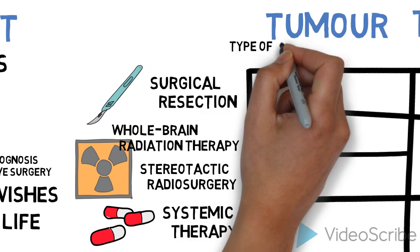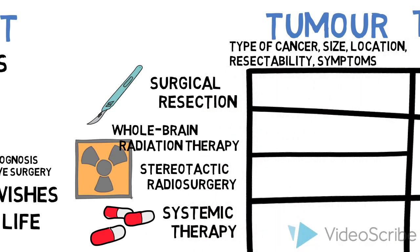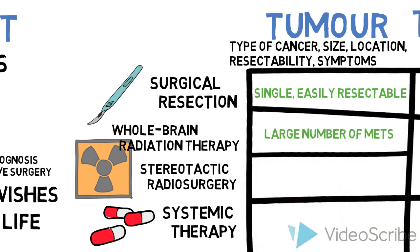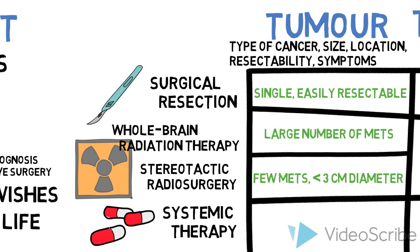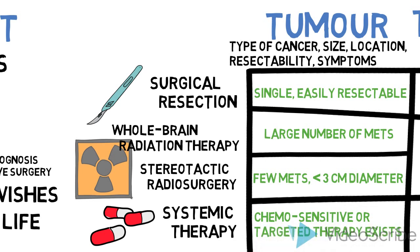Tumor factors to consider include the type of cancer, the size and location of tumors, their resectability, and the symptoms associated with the tumors. For example, single, easily resectable metastases might be treated with surgery, whereas a large number of metastases might be treated with whole brain radiation therapy instead. Stereotactic radiosurgery can be used for patients with a limited number of metastases smaller than 3 cm in diameter. Certain kinds of cancer, particularly those that are very chemotherapy sensitive or those for which targeted therapies are available, can be treated with systemic therapy.